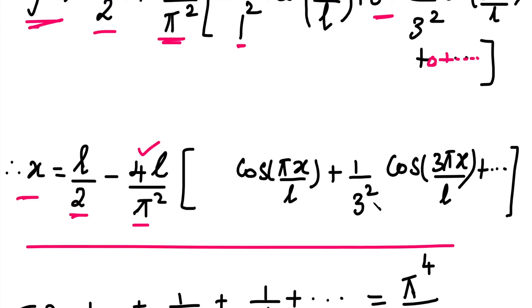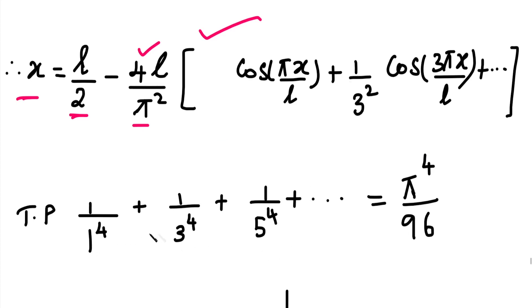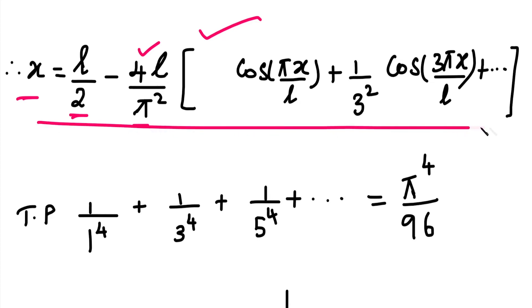Now for the deduction part, to show that 1/1⁴ + 1/3⁴ + 1/5⁴ + etc. equals pi⁴/96, we use Parseval's identity. Since the denominators involve squares like 1², 3², we need to square the series. So we apply Parseval's identity for the half range cosine series.